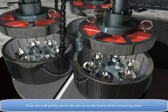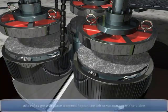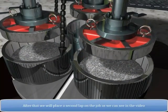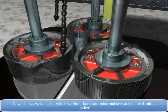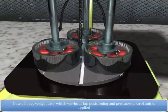Now we will gently place the job in the holes of the retaining plate. After that we will place a second lap on the job. Now a heavy weight disc which works as a lap positioning and pressure control unit is applied.